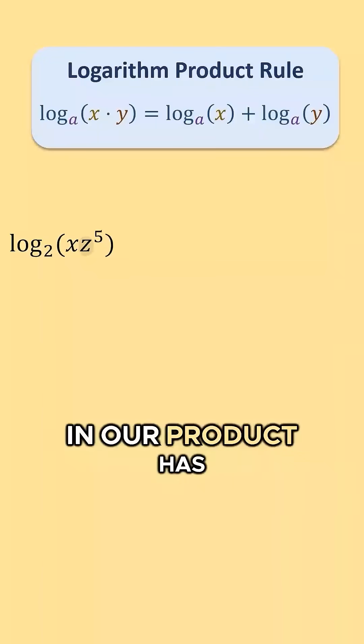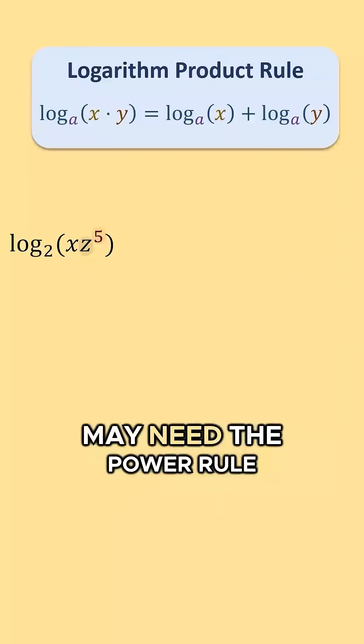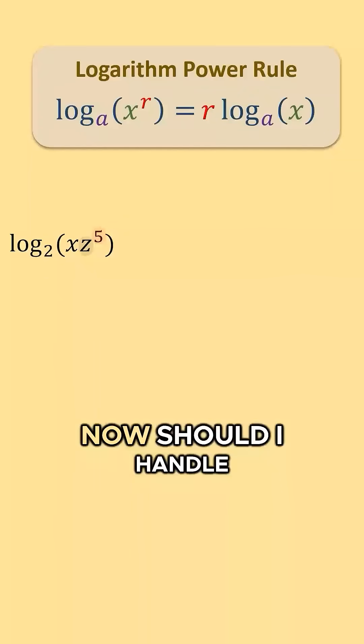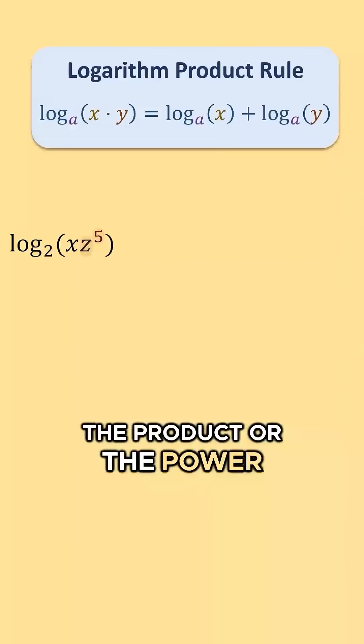One of the expressions in our product has the power of 5, so I think we may need the power rule as well. Now should I handle the product or the power first?